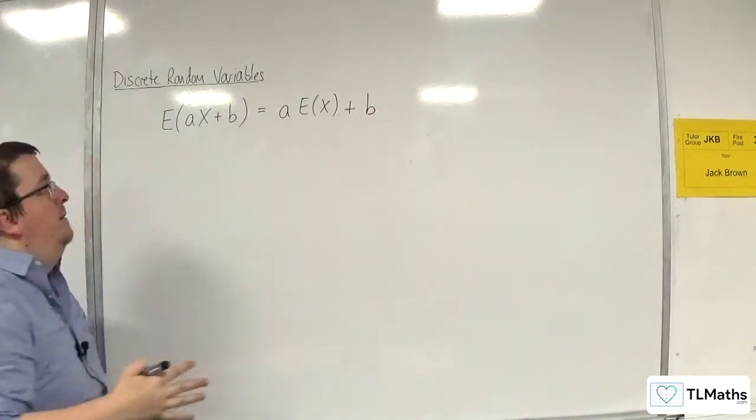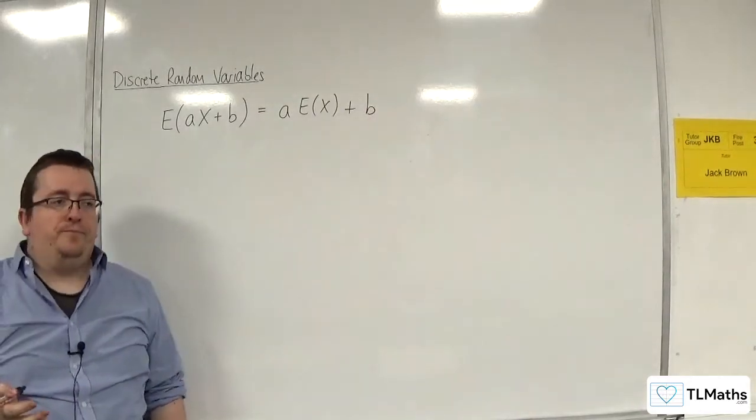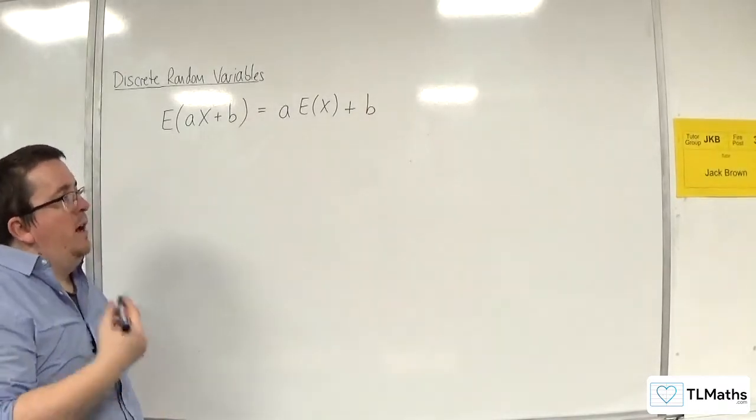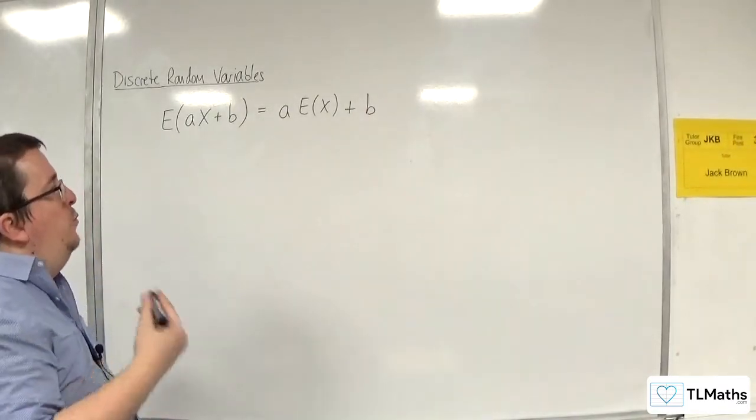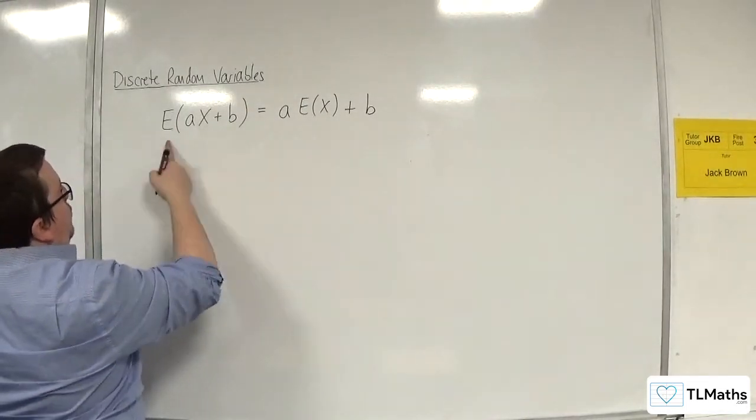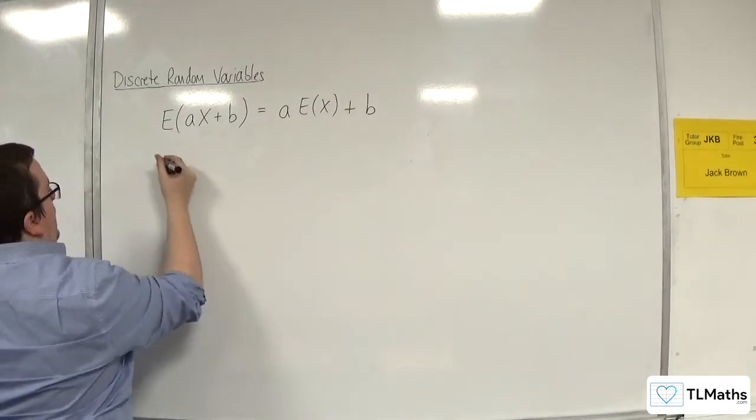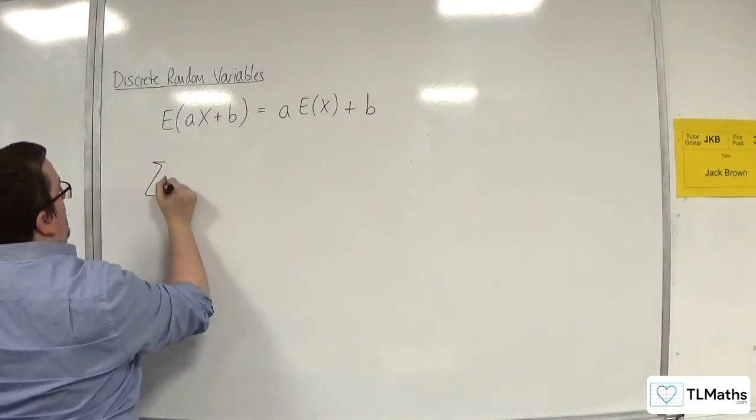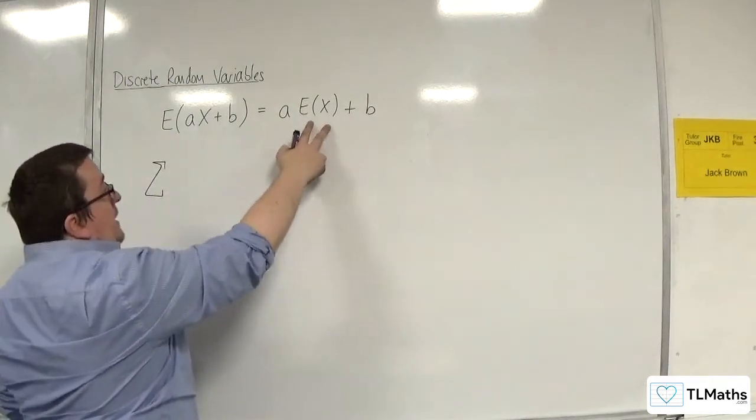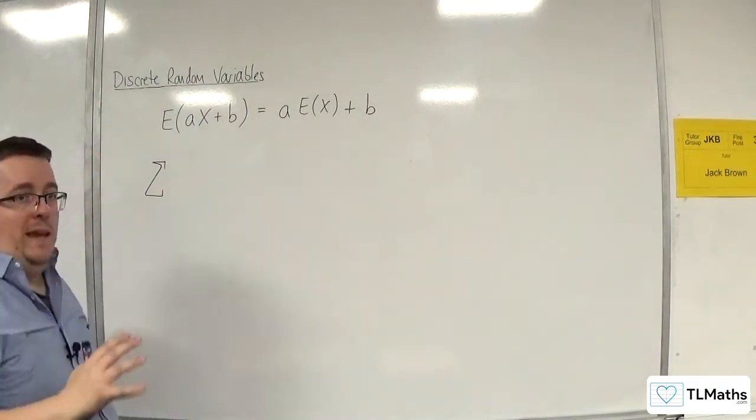So this is a very useful result. Now if you want to see a proof of that as to why that would always be the case, then what you want to think about is what that is. So we know that that will be the sum of, so E(x) is r times the probability of x being equal to r.